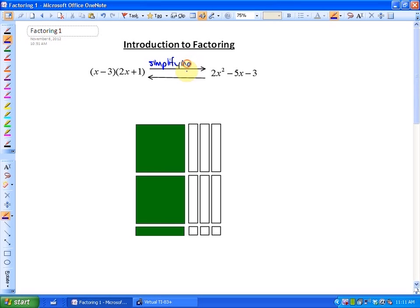Just to remind you of how you could do that, you would expand it and collect like terms. So you'd have 2x squared plus x minus 6x minus 3, which is 2x squared minus 5x minus 3. And as you can see, that is our simplified version of that product.